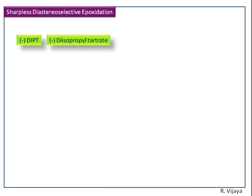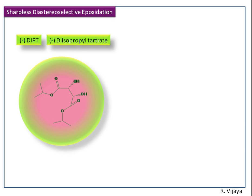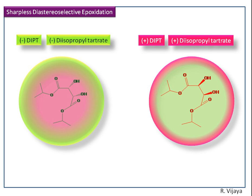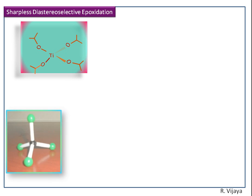Now we see the mechanism. (-)-DAPT is (-)-diisopropyl tartrate. This is the structure of (-)-diisopropyl tartrate, where the hydroxy groups are directed backward to the observer. For (+)-DAPT, the hydroxy groups are directed towards the observer. This is titanium isopropoxide.